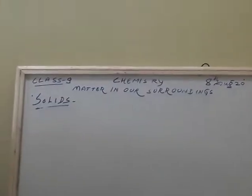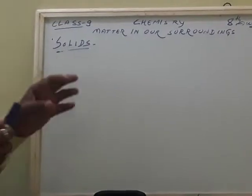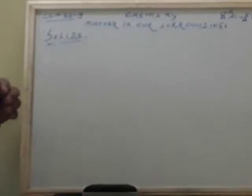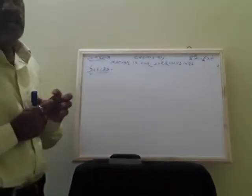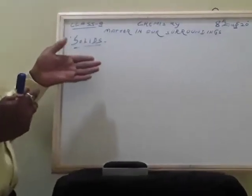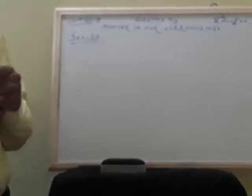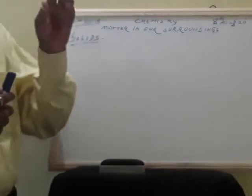What are the properties of solids? Solids are hard in nature and rigid. Solids have a fixed shape, volume, and density. Solids cannot be compressed easily. They are hard because their particles have a strong force of attraction, and that is why they are rigid in nature. They are not elastic also.